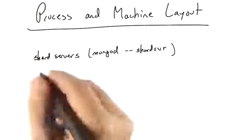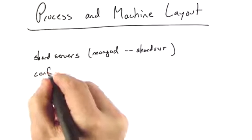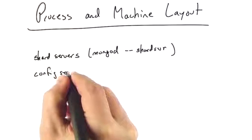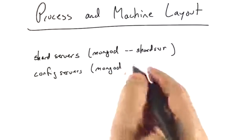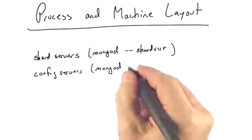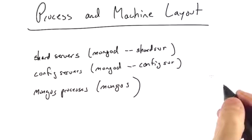We have the shard servers, which are MongoD processes. We have the config servers, which also happen to be MongoD processes, fairly lightweight ones on a smaller cluster. And then we have the MongoS processes.